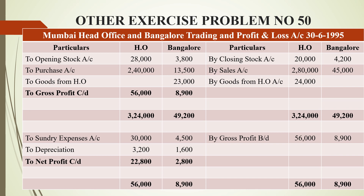We are working out this as a consolidated final accounts problem — just a normal final accounts problem. Under the trading account, the first item on the debit side is opening stock, which is equivalent to purchases from the previous year: 28,000 for head office and 3,800 for Bangalore. Next is purchases — head office purchased from outside 2,400,000 and branch purchased 13,500 rupees worth of goods. Head office sent goods to branch worth 23,000 rupees.